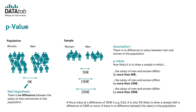The fastest way to calculate the p-value is by using DataTap, and I will show you how to do it in the following minutes. So what does a p-value of 0.03 mean? The result means that it's only 3% likely to draw a sample with a salary difference of 250 euros or more, assuming that we have no salary difference in the population.